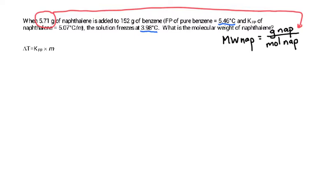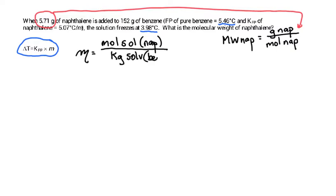And in order to do that, we're going to use the freezing point depression equation where the change in temperature is equal to the molal freezing point times the molality. Molality is equal to moles of solute, in this case naphthalene, divided by kilograms of solvent, in this case benzene.